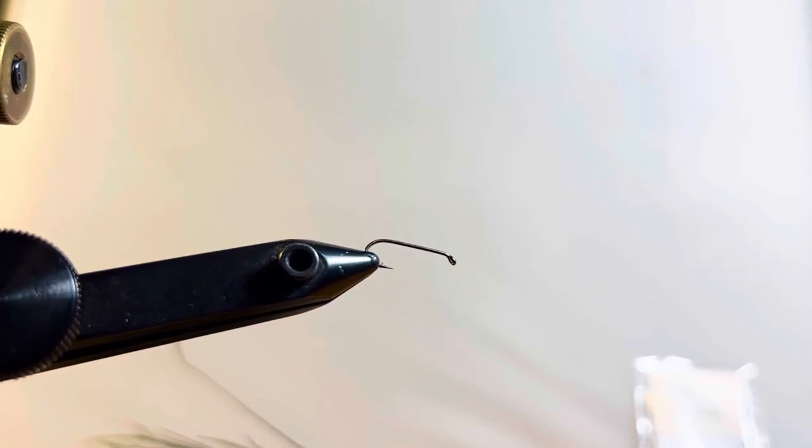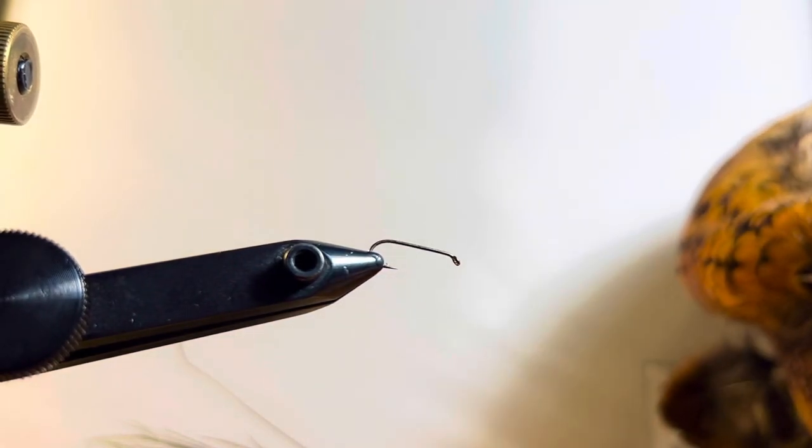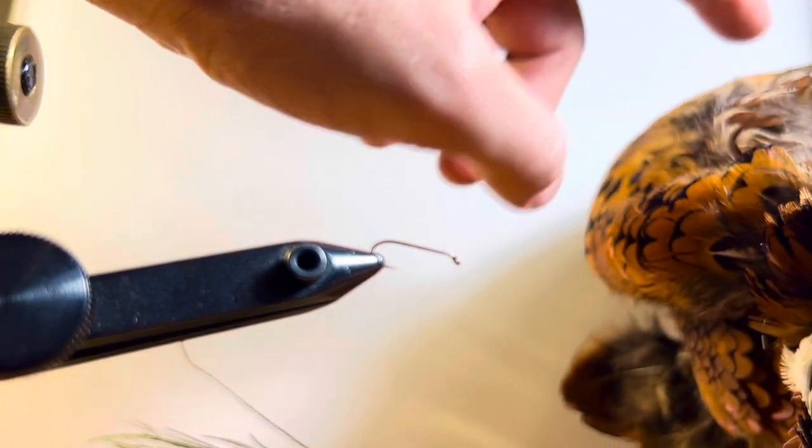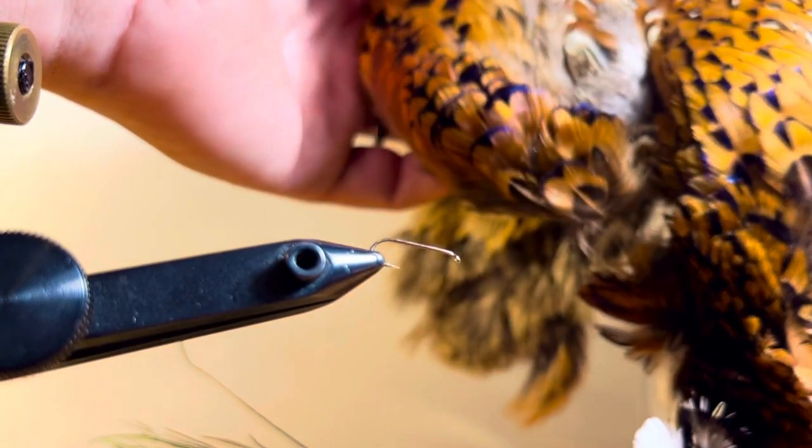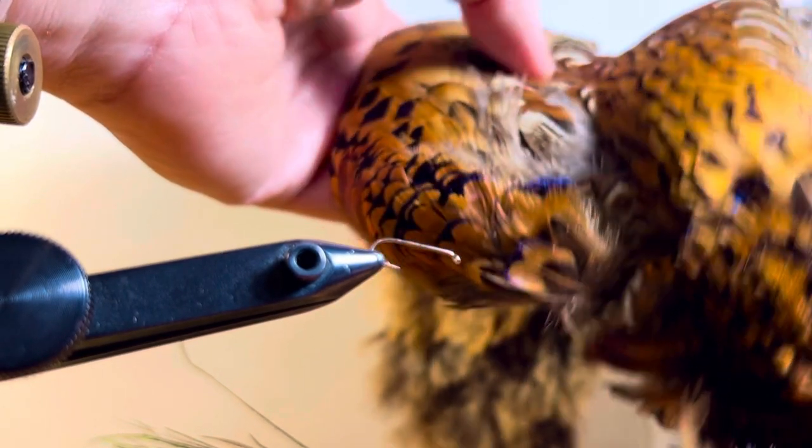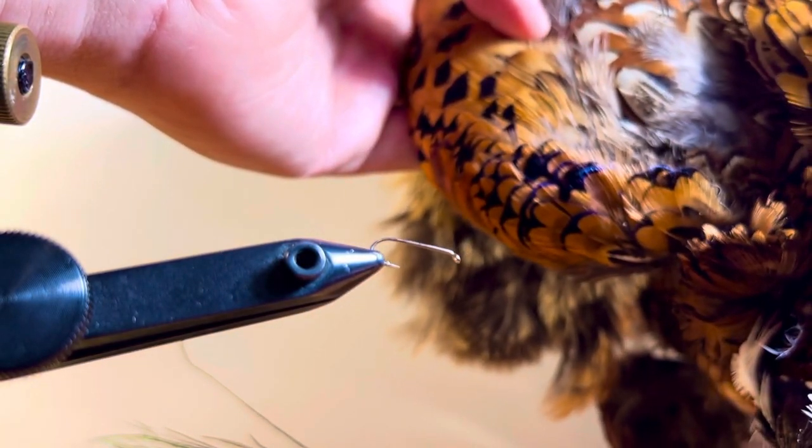Alrighty everyone, welcome back. We're tying up the Carey Special. It's a great nymph and where we're starting with is two of these feathers right here. They're called the church window feathers. They're kind of in between the shoulder and the back feathers on a rooster pheasant and there's enough on there to probably tie up a couple dozen.